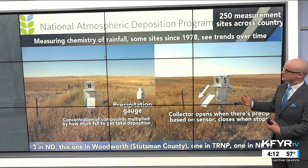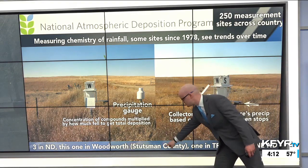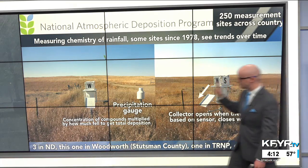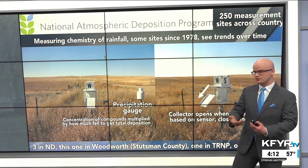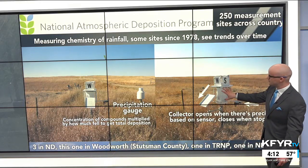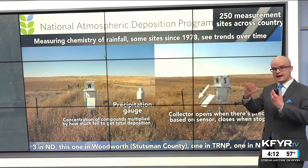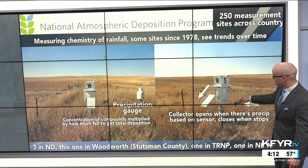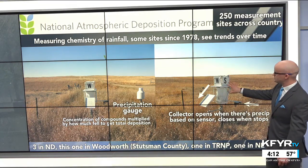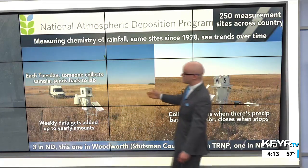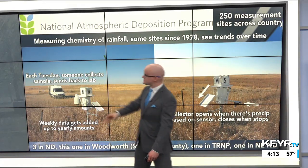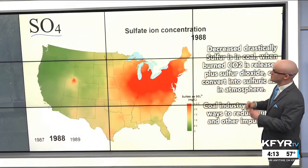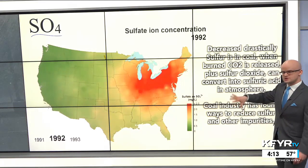The organization that measures this is the National Atmospheric Deposition Program. They have 200 measurement sites across the country — three in North Dakota: one in Woodworth in Stutsman County, one in Theodore Roosevelt National Park, and one in the northeastern part of the state. A precipitation gauge measures rain or snow that falls, and within the bucket it measures concentration, which you can multiply to determine how much nitrate, sulfate, or ammonium falls throughout the year. The collector opens when precipitation falls through a sensor and closes once precipitation stops, then someone goes there each week to collect the sample and send it to the lab for weekly data updates.